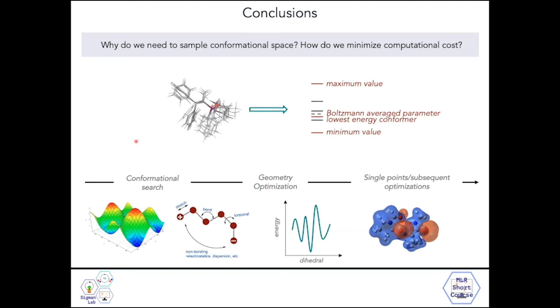In order to get these values, we need to follow this general procedure, where we begin with a conformational search, followed by a geometry optimization, trying to get to that global minimum rather than just local minimum, and then calculating single points and potentially computing subsequent optimizations, such that we can acquire parameters to develop statistical models.